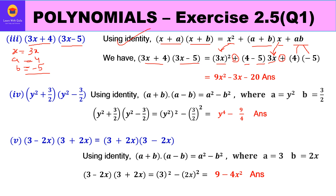Solving: (3x)² = 9x². Then (4 − 5) = −1, multiplied by 3x gives −3x. And 4 × (−5) = −20. So the product of (3x + 4)(3x − 5) is 9x² − 3x − 20.